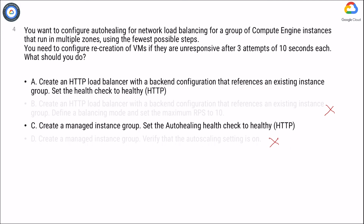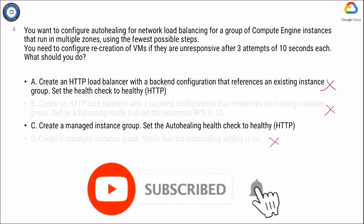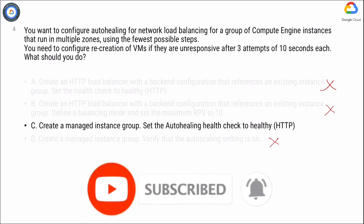Option C: Application-based autohealing improves application availability by relying on a health checking signal that detects application-specific issues such as freezing, crashing, or overloading. If a health check determines that an application has failed on an instance, the group automatically recreates that instance. Managed instance group health checks proactively signal to delete and recreate instances that become unhealthy. So the correct answer is Option C.